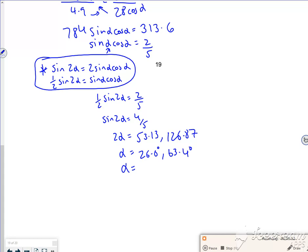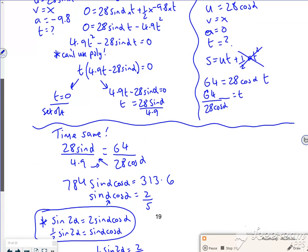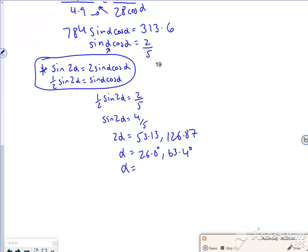So I've used the fact that the times are the same and put them equal to each other and solved it that way. It's quite sneaky, isn't it? G was minus 9.8, so I want significant figures, so 27 degrees, 63 degrees. There you go, that one's done.